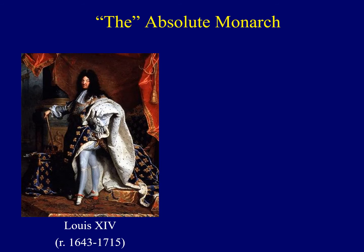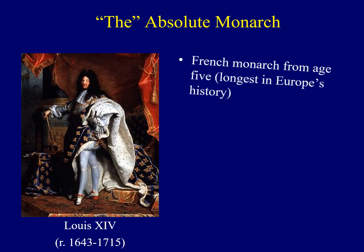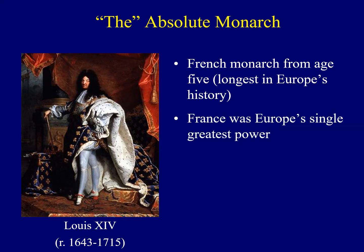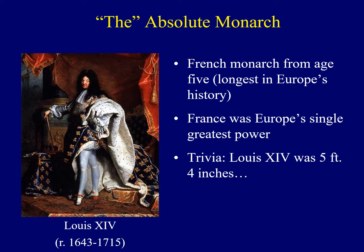If you wanted to identify the best example of an absolute monarch in Europe during this era, it would be Louis XIV. He set the record for being the longest-serving monarch in Europe's history. Technically he became king at the age of five, although a regent ruled in his place until his early twenties. During his reign, France was Europe's greatest single power. One piece of trivia: while Louis XIV towered over Europe politically, he was quite short — only about five feet four inches tall.